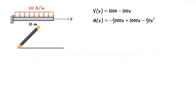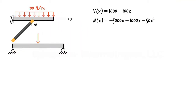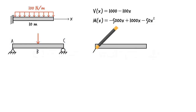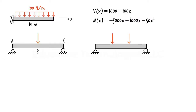For example, in this beam there is a concentrated load at B. Since the load divides the beam into two segments, we need to write two equations for shear and two equations for moment — a pair of equations for each segment. Here, three pairs of equations are needed, since the concentrated loads divide the beam into three segments.